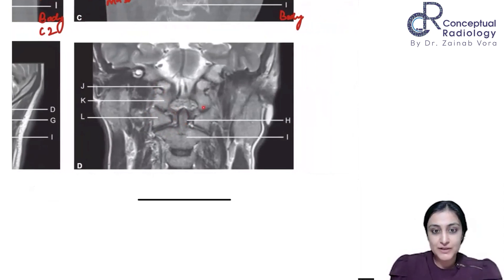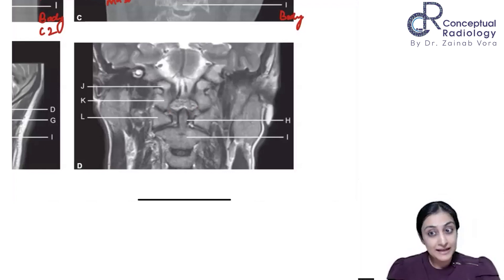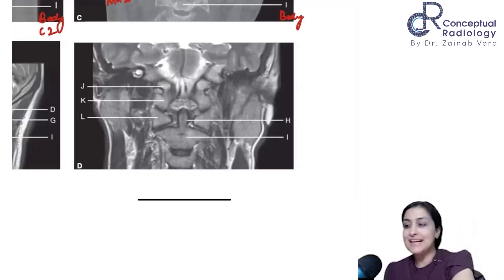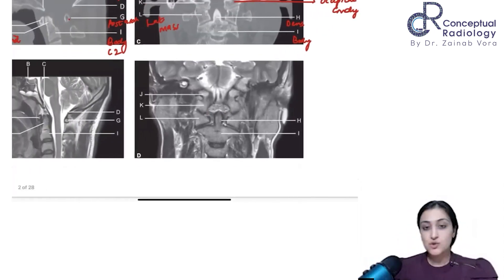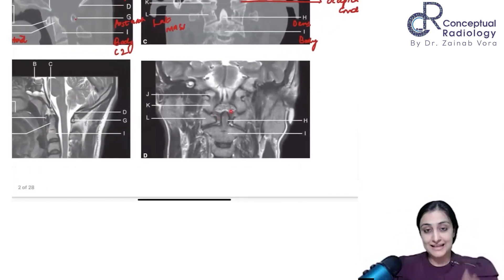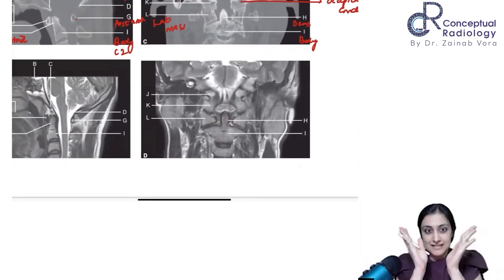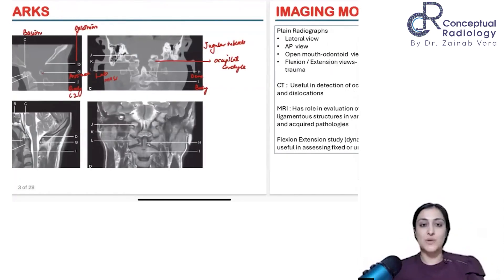One quick question — what is this ligament going laterally on the coronal image? This is the alar ligament. This is not the cruciate ligament. Cruciate should be cross-shaped. The alar goes laterally, slanting — that is how you remember alar. CVJ will most of the time come as a theory answer. Getting a long case from CVJ in the final exam is very rare — that is pure bad luck.